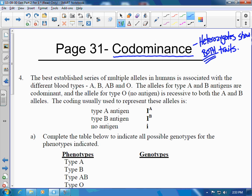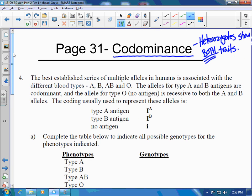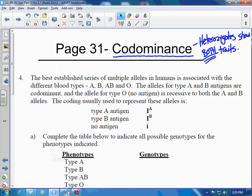The best scenario, the most common scenario where we see co-dominance is in human blood typing. So let's take a quick look at this question which is on page 31 in your workbook.